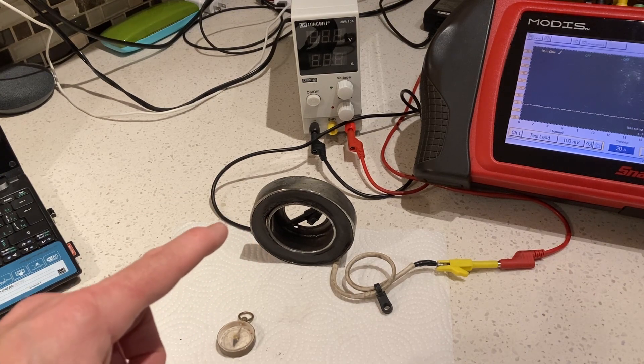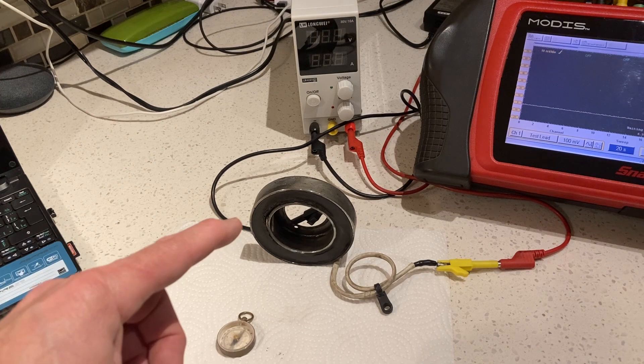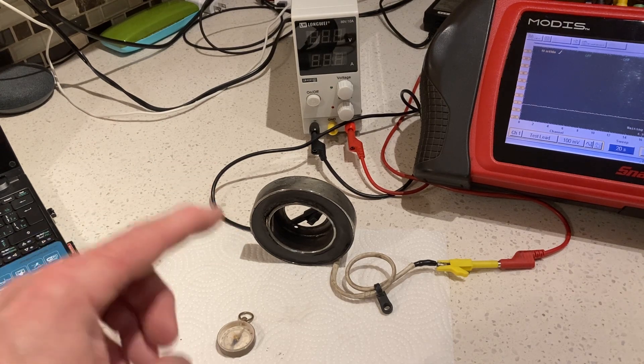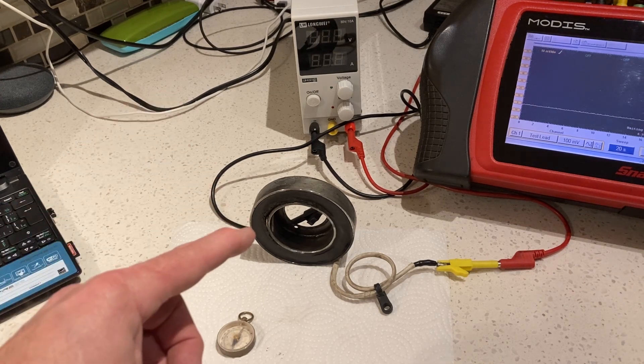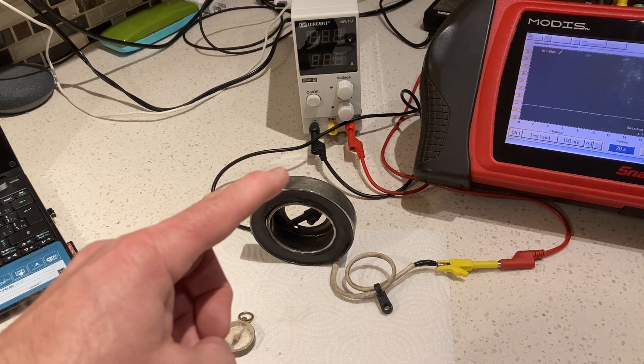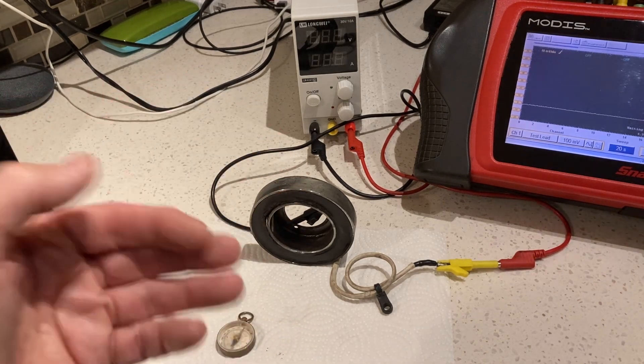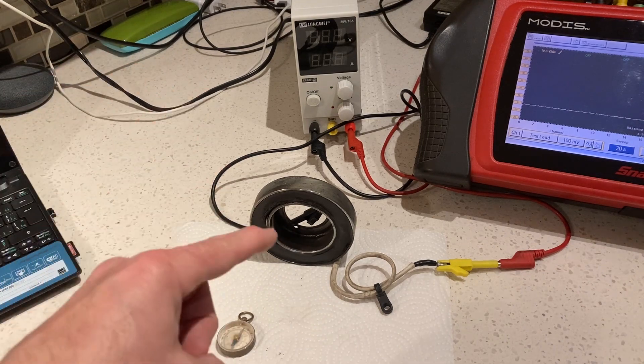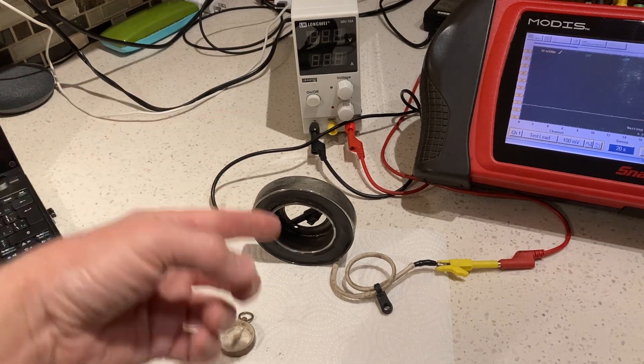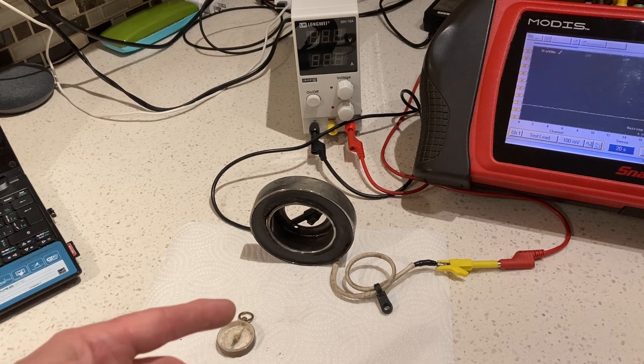This coil is from an automotive air conditioning compressor clutch assembly. This is the electromagnet coil that pulls the clutch plate in to engage the drive for the compressor.